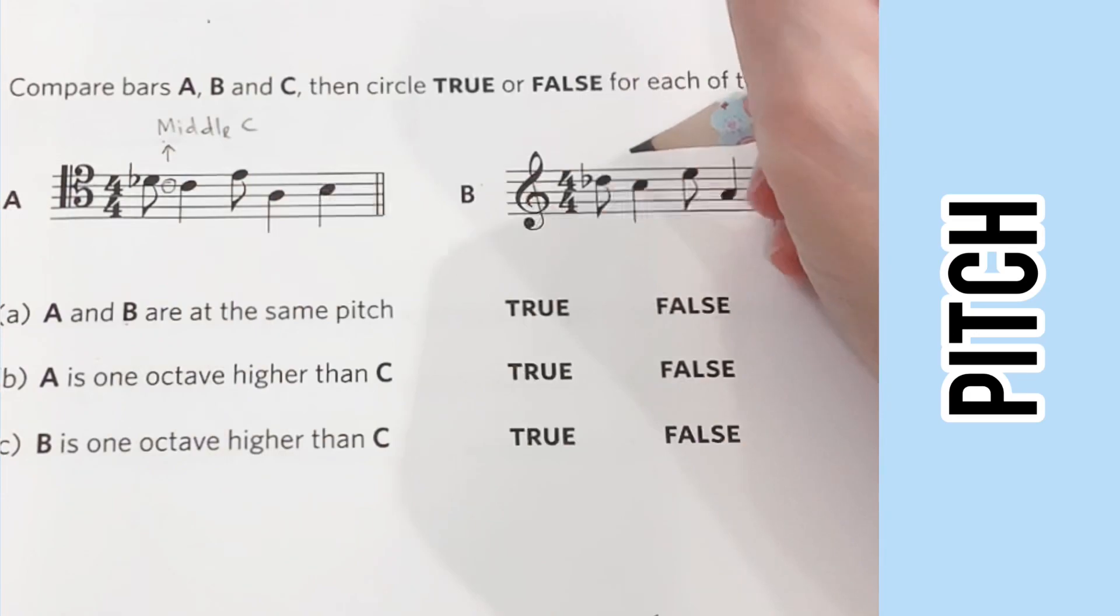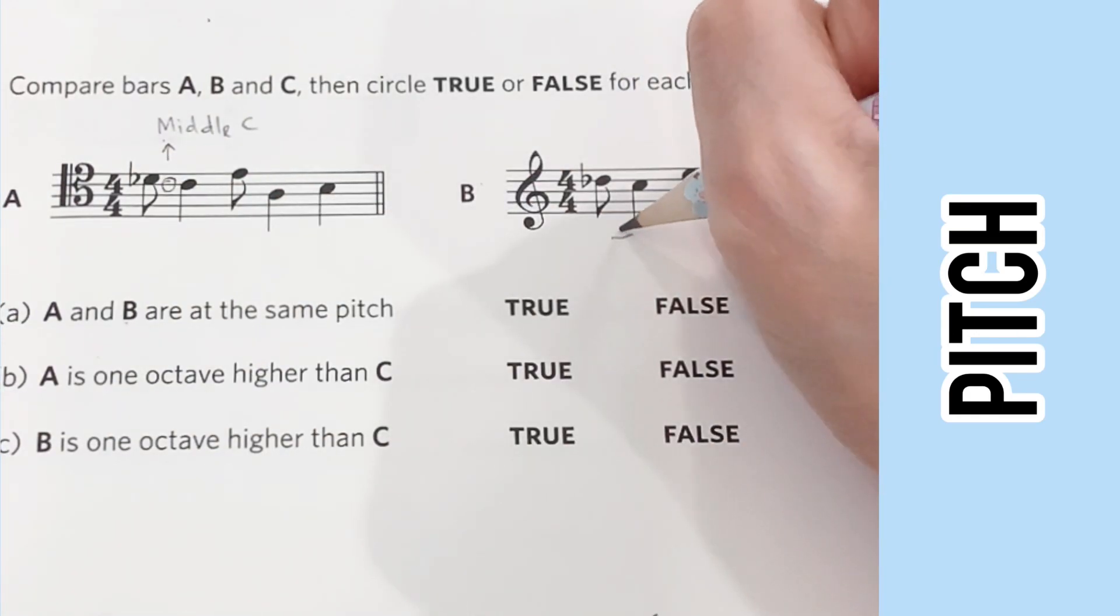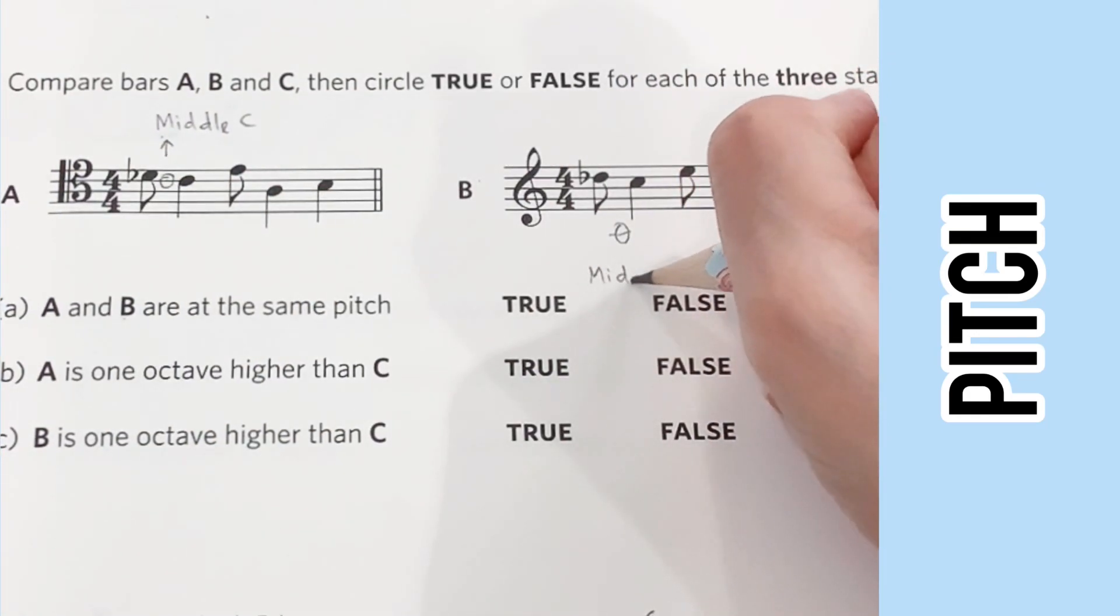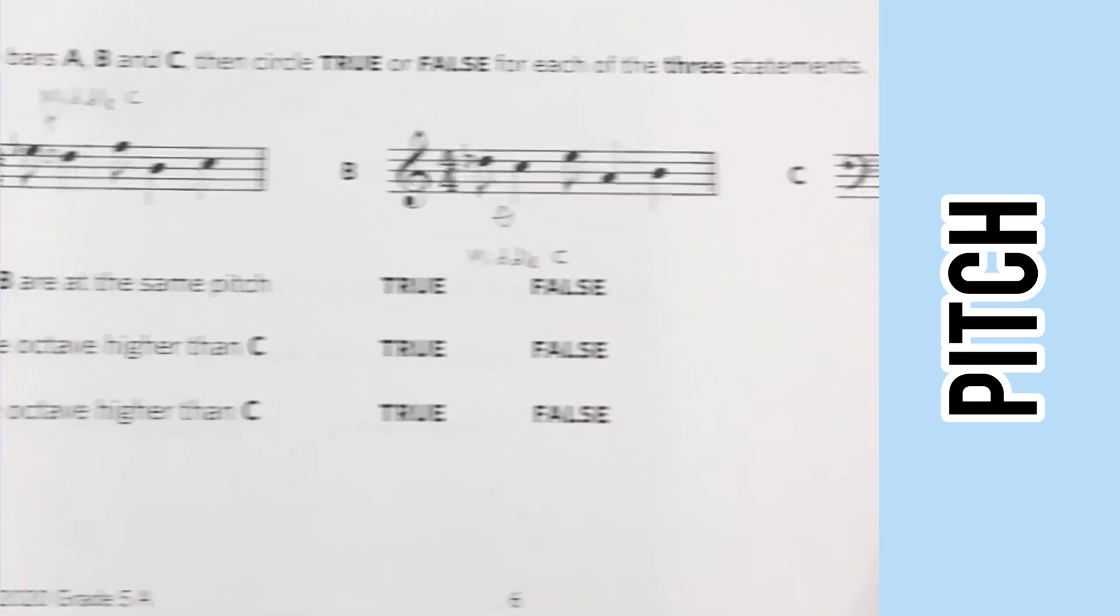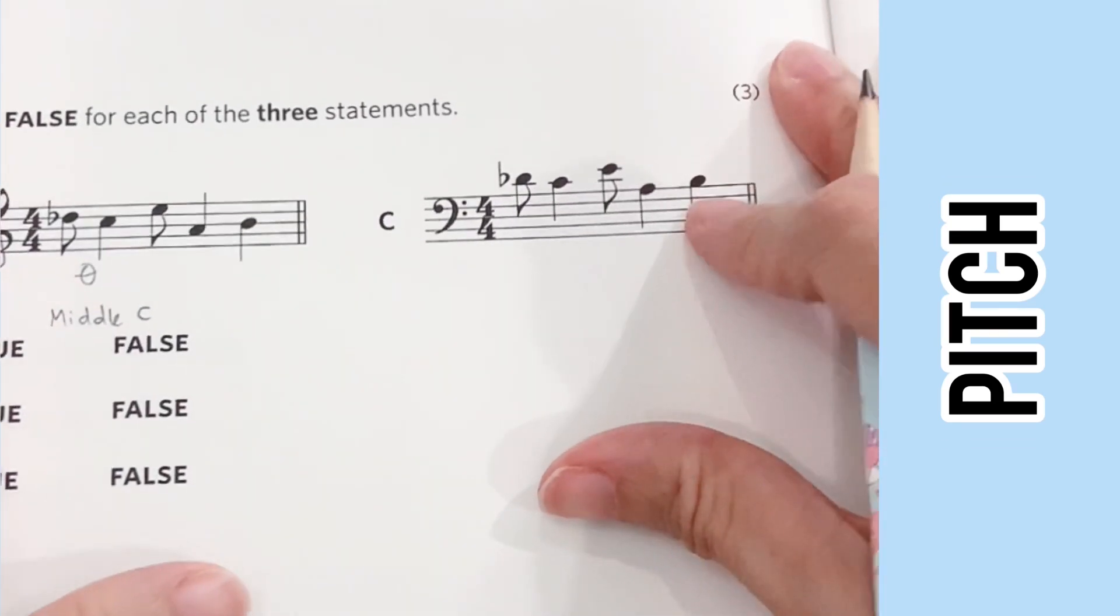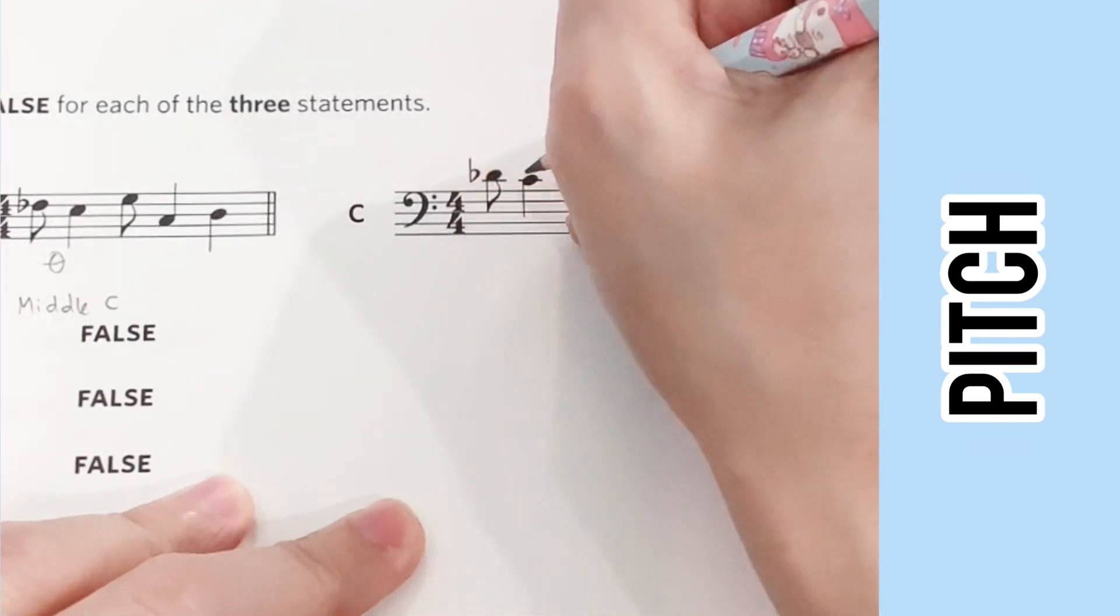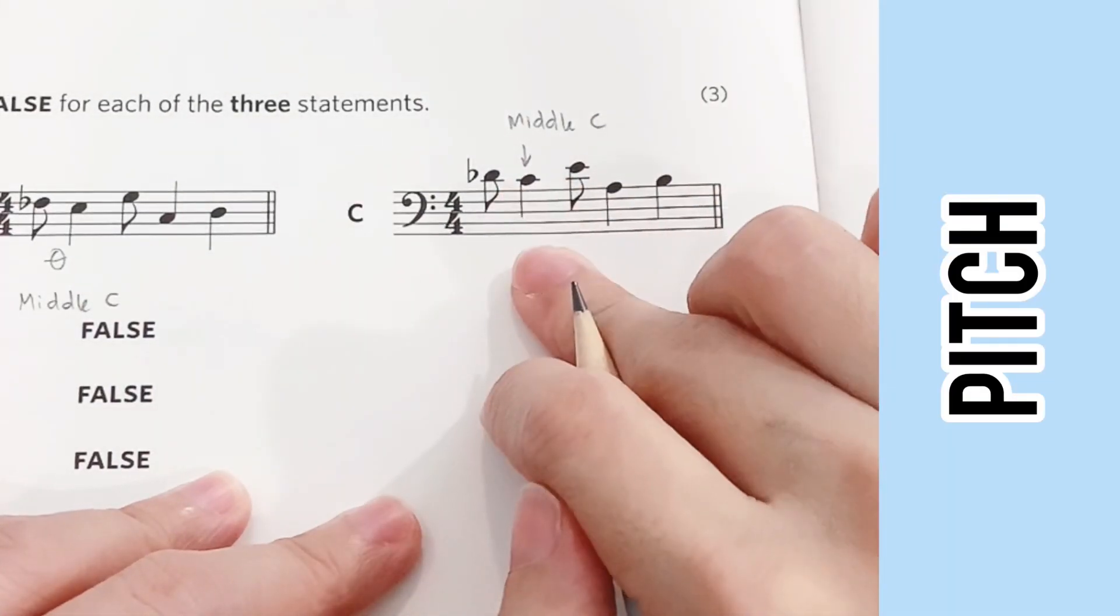For the tenor clef bar here, we can see that most of the notes are around middle C, whereas for your treble clef here, most of the notes are an octave higher than middle C. Finally, for the bass clef here, the notes are mostly around middle C as well.